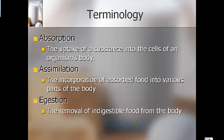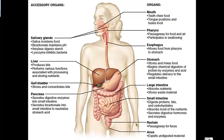Absorption is when your body absorbs nutrients into the cells — it happens mostly in the small intestine. Assimilation is when those nutrients are spread throughout your body. And egestion is when anything your body did not digest comes out your tush.